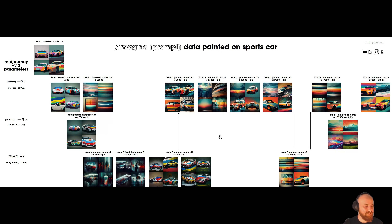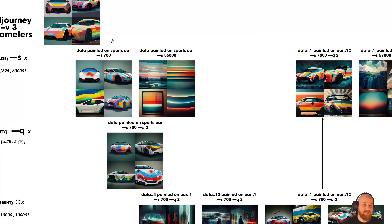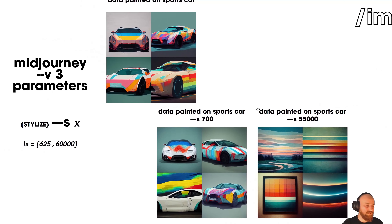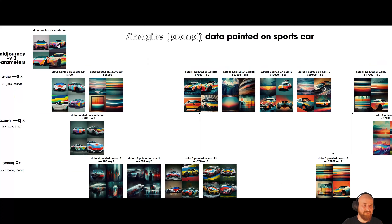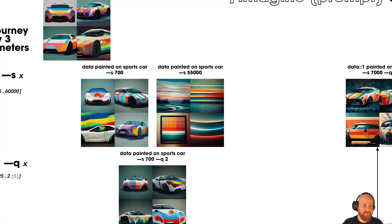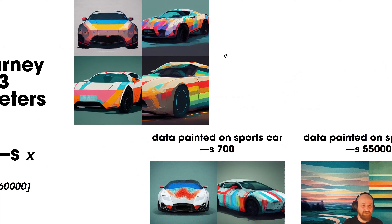Let's look at this flowchart. I'm starting with the very basic image — no parameters at all — and seeing what comes out, then changing parameters step by step. You can track my progress from left to right in the PDF. Moving bottom or up means I'm changing the parameter indicated for that row. The first image uses just the default values for 'data painted on sports car.'